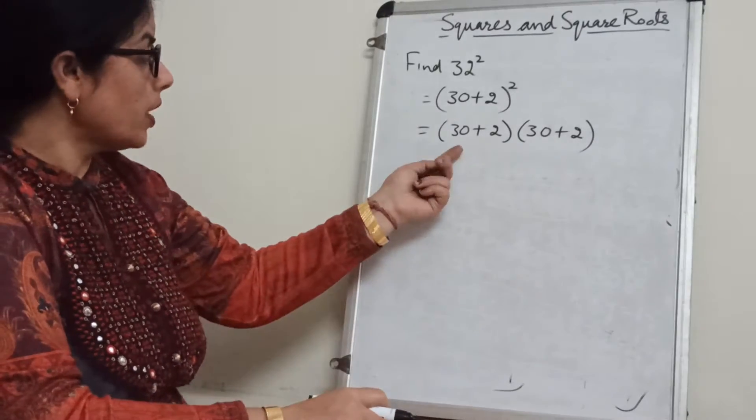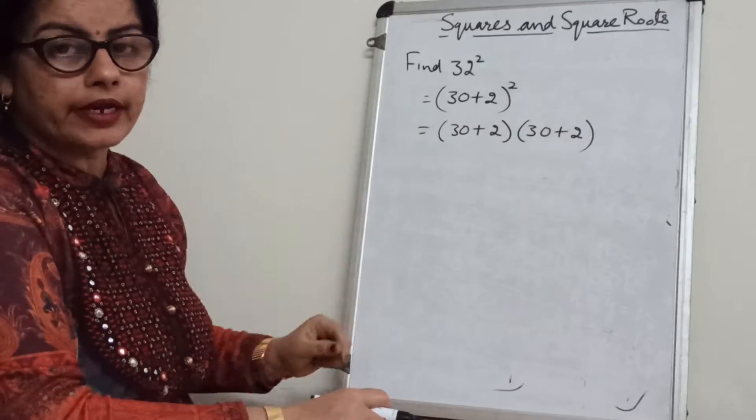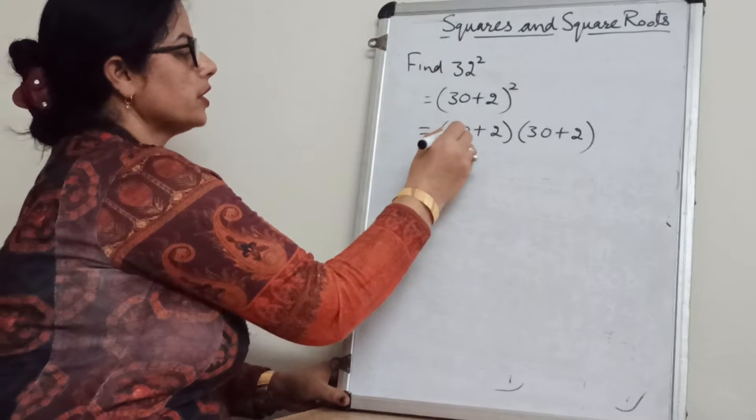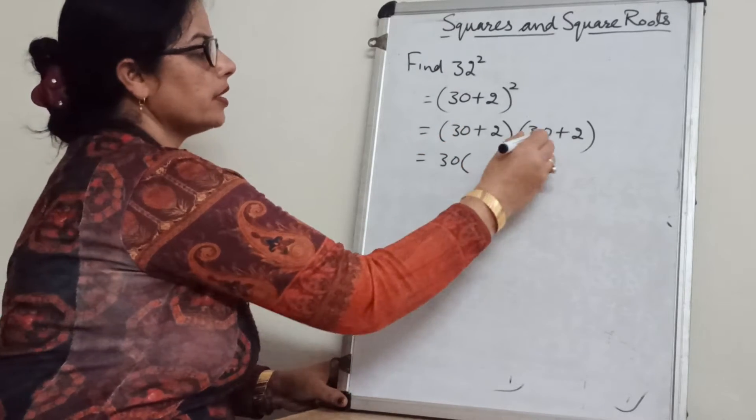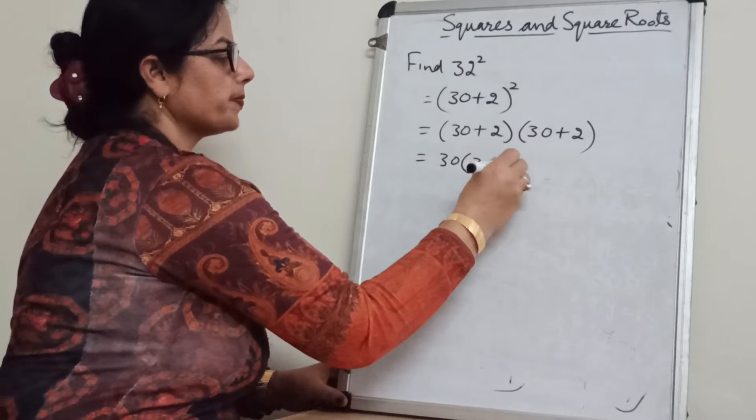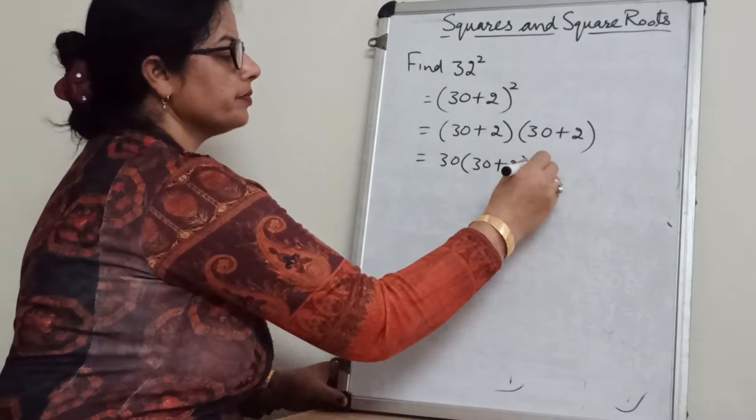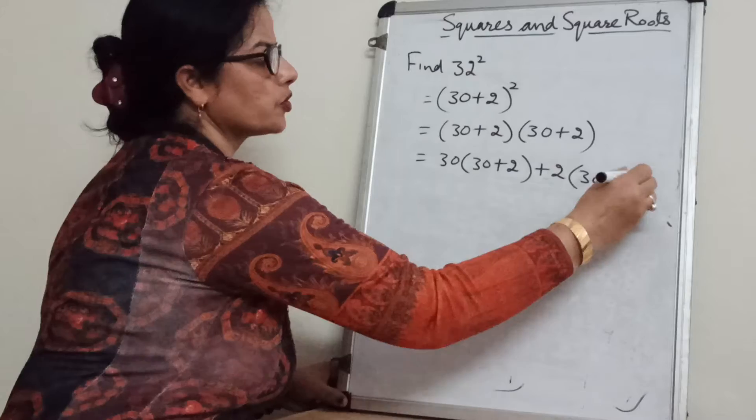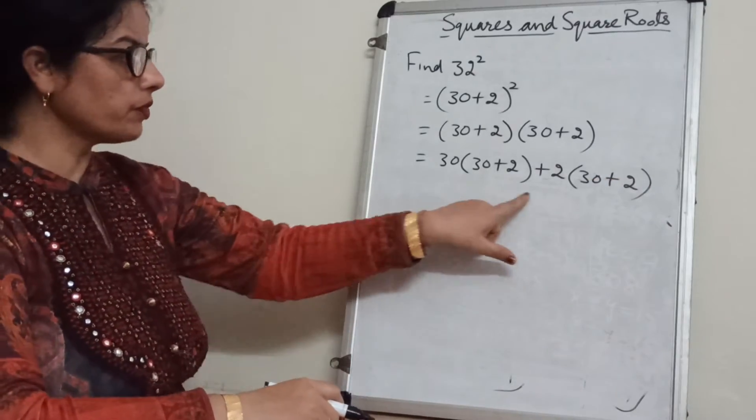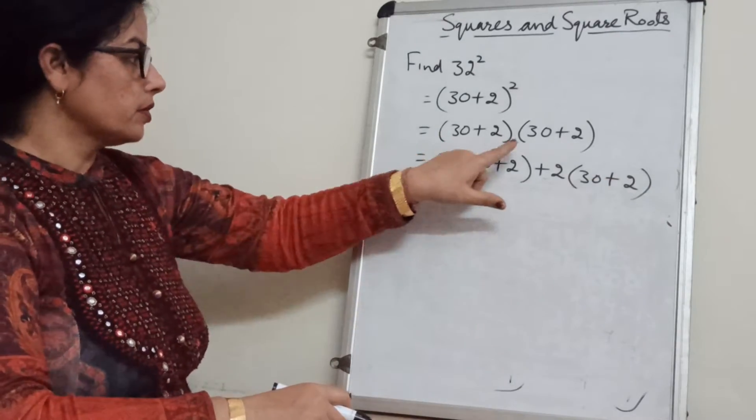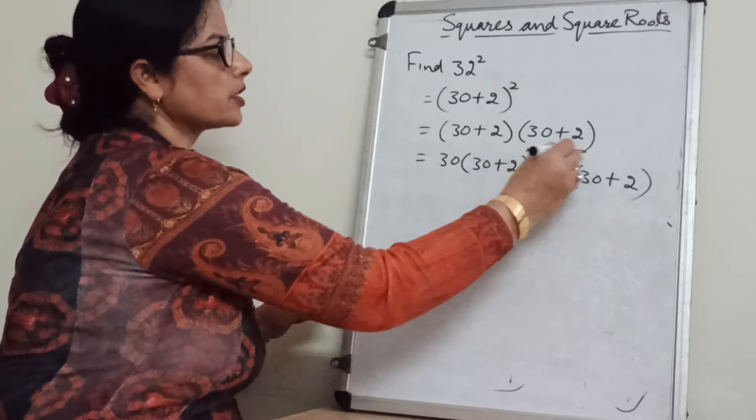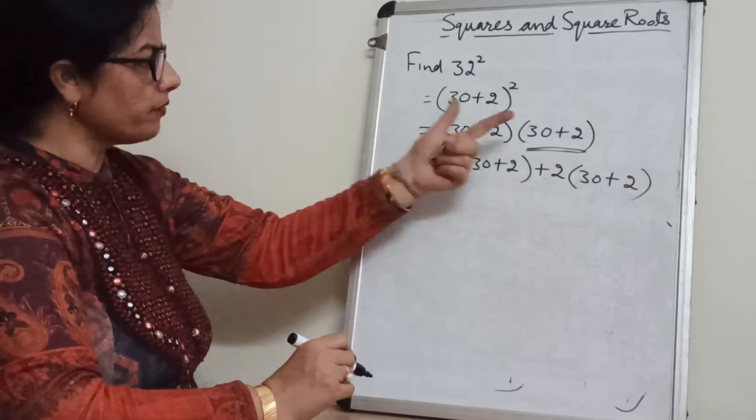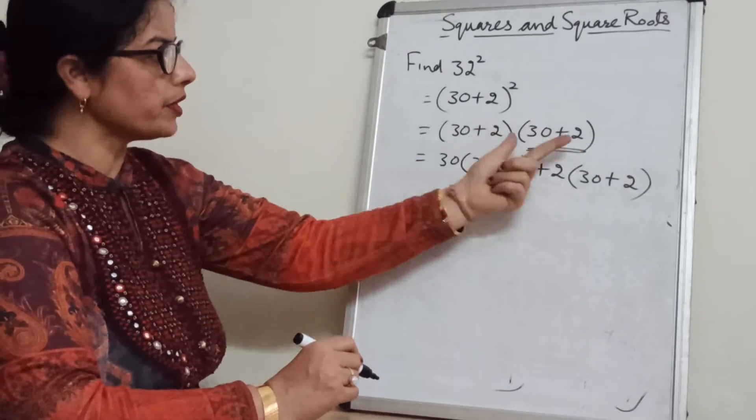You know how to multiply binomial with binomial. First we will take 30 and then multiply by 30 plus 2. Then second term plus 2 and multiply by 30 plus 2. In this way we will multiply. This binomial we will keep fixed. One time 30 with this binomial. One time 2 with this binomial.